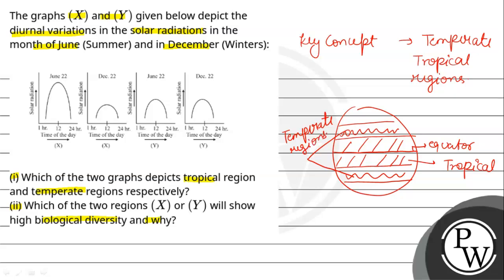If I talk about tropical regions, in the tropical region we have no variations in the solar radiation throughout the year - it will be almost the same. Whereas in temperate regions, we will see a contrast and fluctuations in the summers and in the winters. So fluctuations will be there in solar radiation.